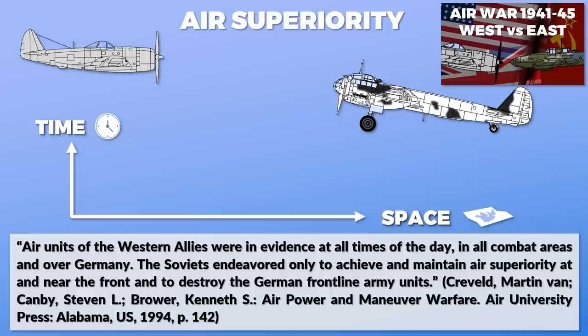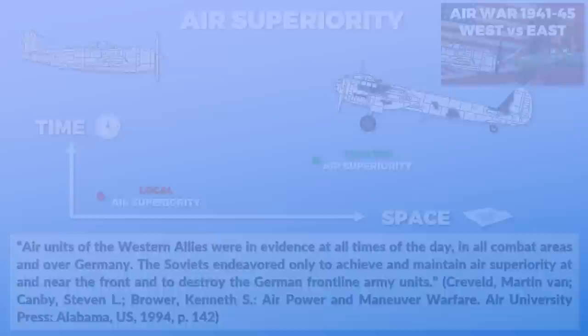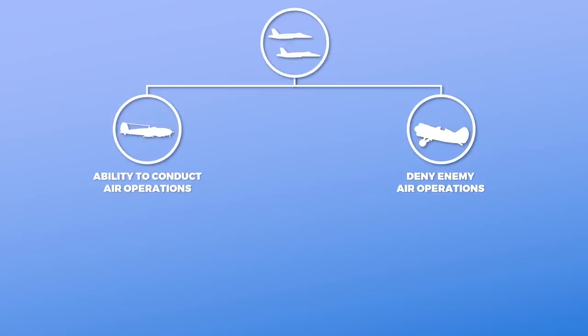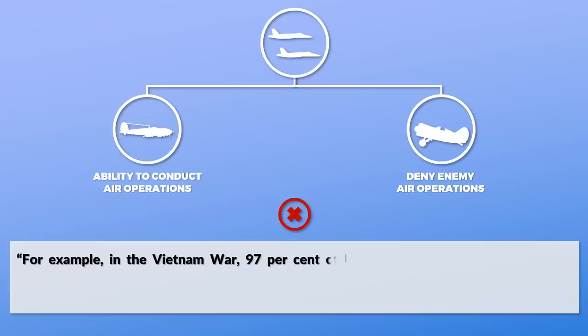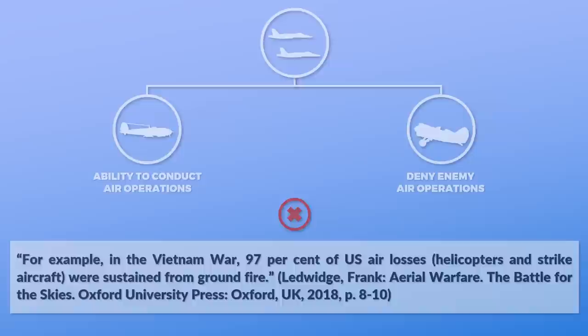Another crucial aspect that often gets overlooked is that there are two components to air superiority. It is about denying the enemy the ability to conduct air operations, yet at the same time one must be able to conduct air operations oneself. This means that in some cases control of the air can be denied even without access to fighters. For example, in the Vietnam War, 97% of US air losses — helicopters and strike aircraft — were sustained from ground fire.